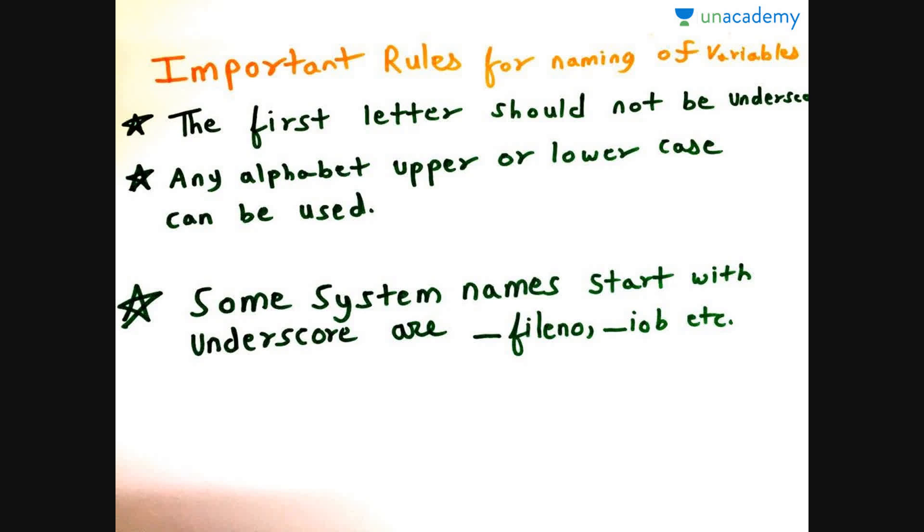You can start the variable name with any alphabet, upper or lower case. Some system names that start with underscore are underscore file or underscore IOB etc. Hence always remember do not name the variables with the keywords, as they are already predefined.